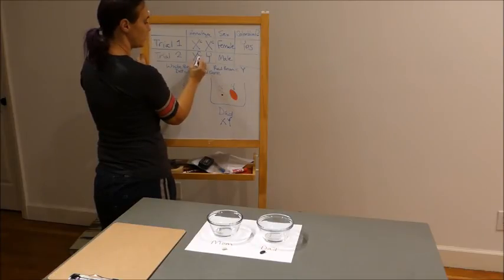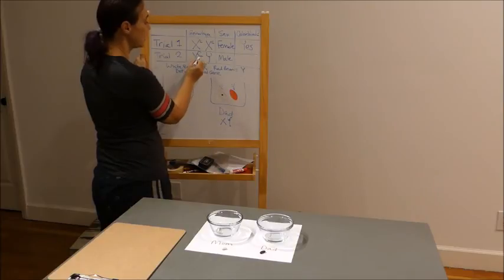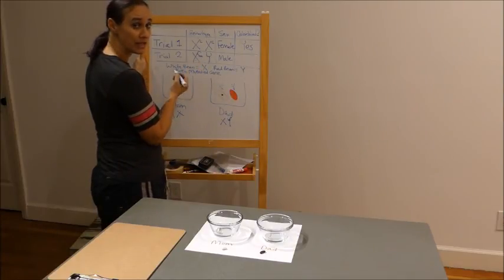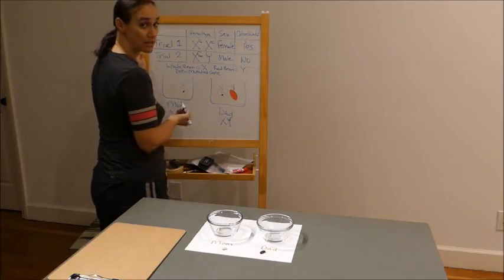We know that X and Y is going to give me a male. We know that there's only one allele associated with this gene. It is a capital C. It is dominant. So he's normal. So no, he's not colorblind.